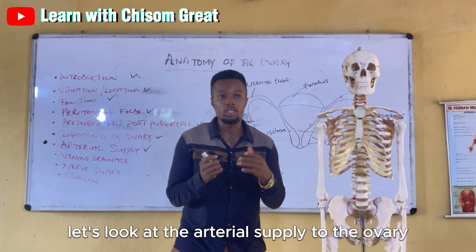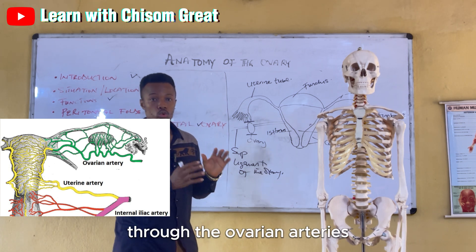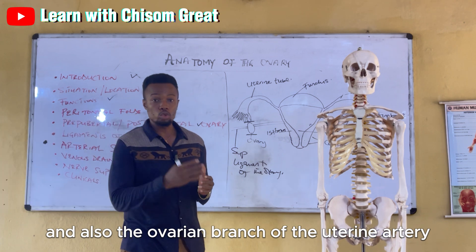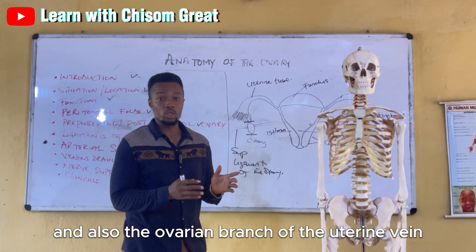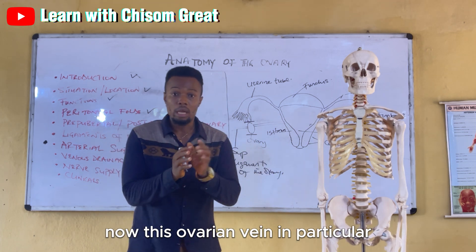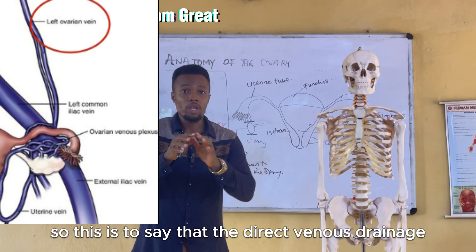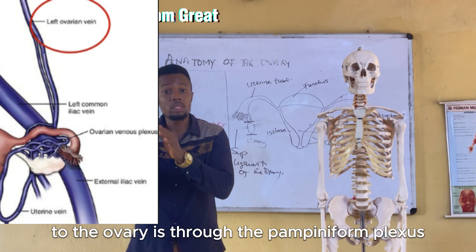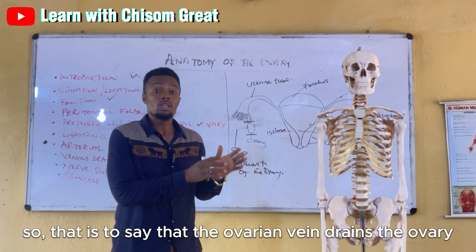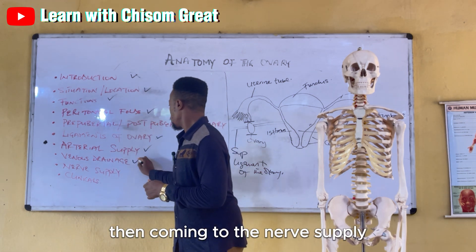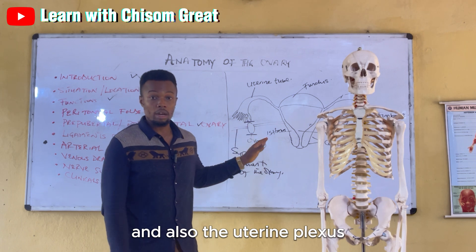The arterial supply to the ovary is through the ovarian arteries and also the ovarian branch of the uterine artery. Venous drainage is through the ovarian vein and the ovarian branch of the uterine vein. The ovarian vein is formed by the pampiniform plexus, which provides direct venous drainage. The nerve supply is from the ovarian plexus and the uterine plexus.